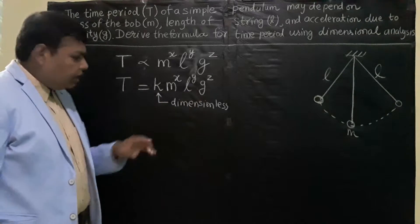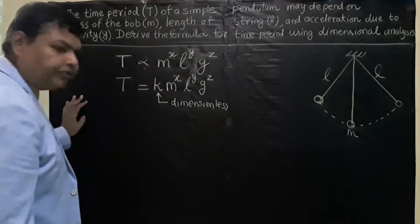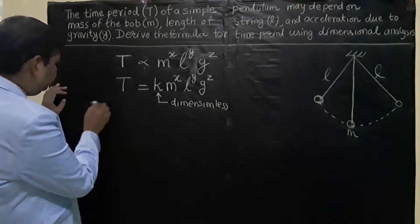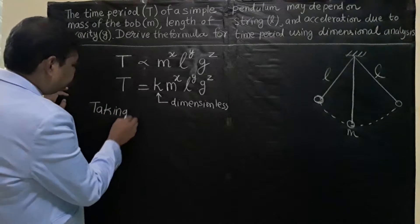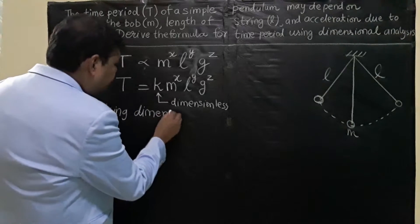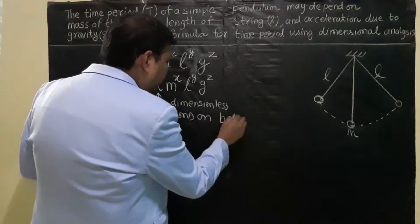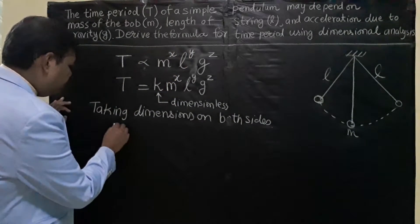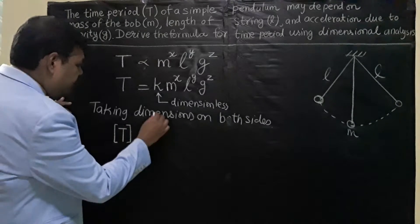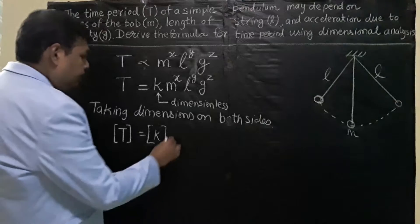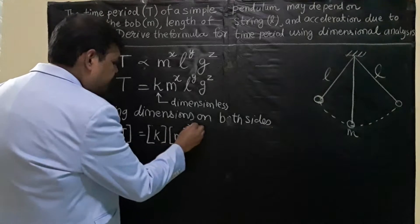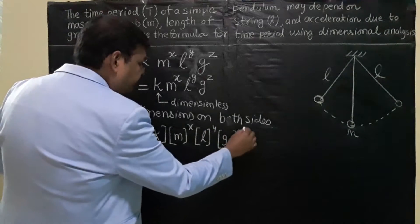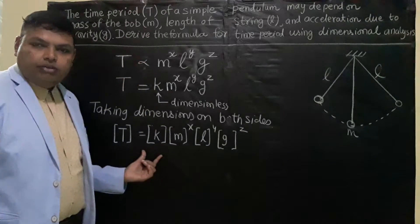The next step is to write down the dimensions on both the left-hand side and the right-hand side. Taking dimensions on both sides, on the left-hand side we write the dimension of T, and on the right-hand side we write the dimension of K, then the dimension of M to the power X, dimension of L to the power Y, and dimension of G to the power Z. Square brackets mean we write down their dimensions.